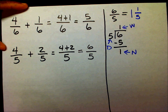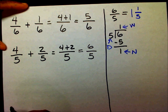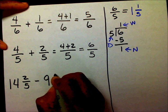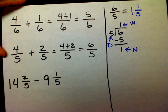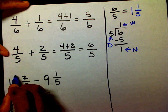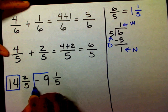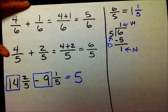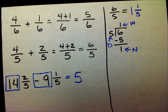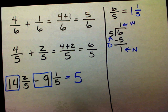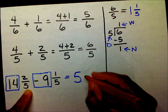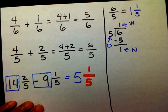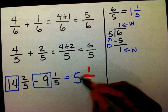Let's try another one. Let's say I had 14 and 2/5 minus 9 and 1/5. The first thing I want to do is look at my two whole numbers here. 14 minus 9. Well, 14 minus 9 is 5. Now, I have the same denominator. So I'm going to draw my line. My denominator is going to stay 5 and 2 minus 1 is 1. So my answer is going to be 5 and 1/5.